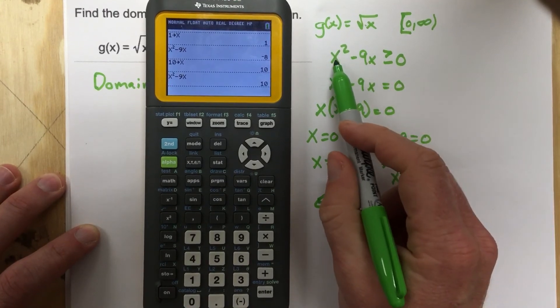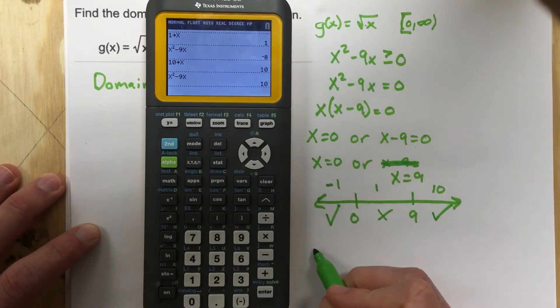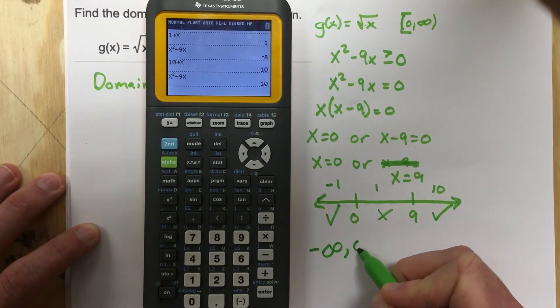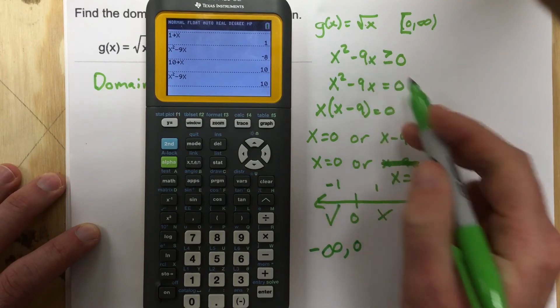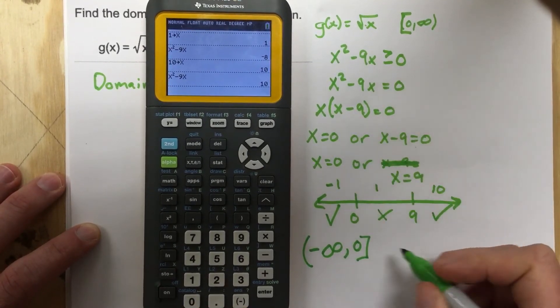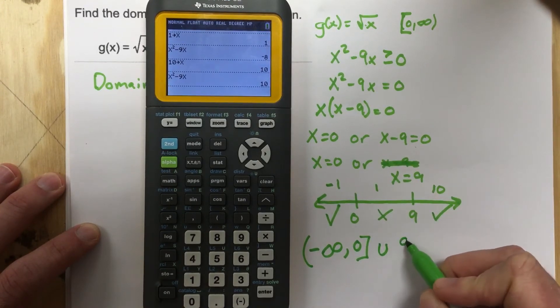So for x squared minus 9x being greater than or equal to zero, that happens from negative infinity up to zero. Because if I plug in zero, I still get zero. So this includes the root because of the equal sign. And union from 9 all the way up to infinity.